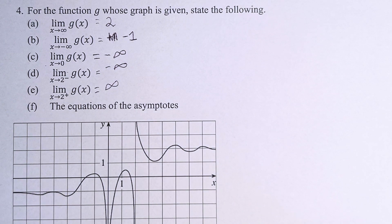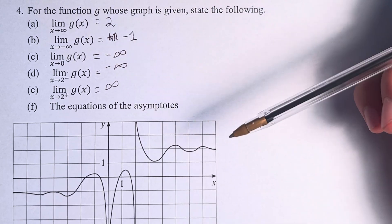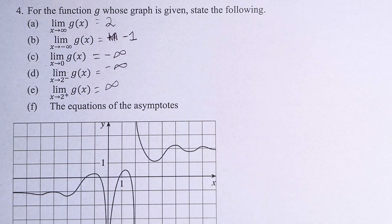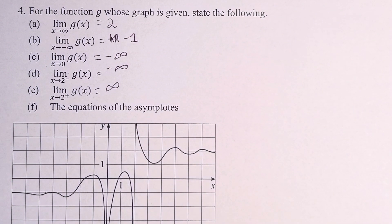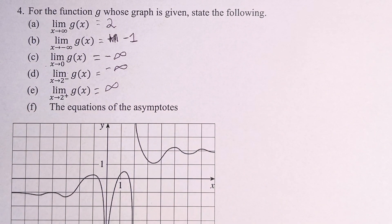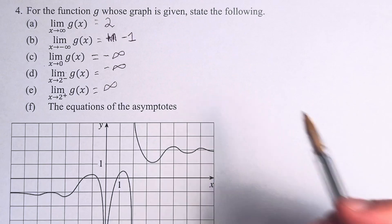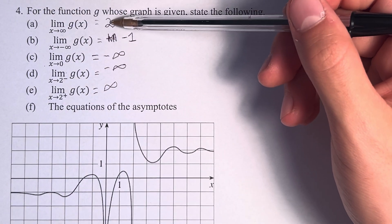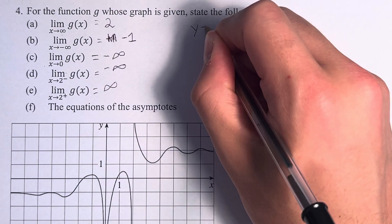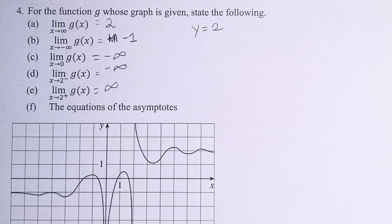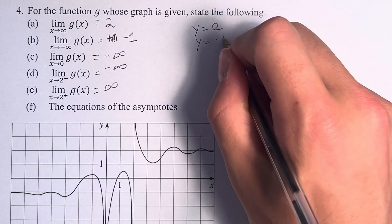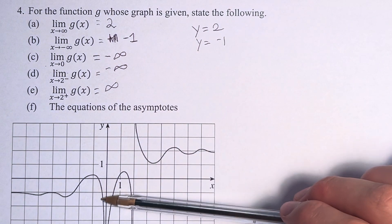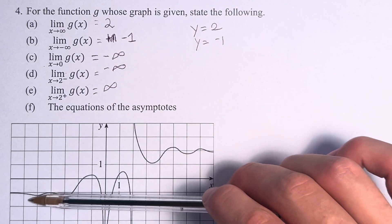In part f, we're asked to state the equations of the asymptotes. The asymptotes are the values that the function is approaching — not necessarily being at it at any particular point, but approaching it over a distance, whether that's x distance or y distance. The limit as x approaches infinity of the function is equal to 2, therefore y equals 2 is a horizontal asymptote. As x approaches negative infinity, the function approaches negative 1, so y equals negative 1 is another horizontal asymptote, as we go horizontally in this direction.